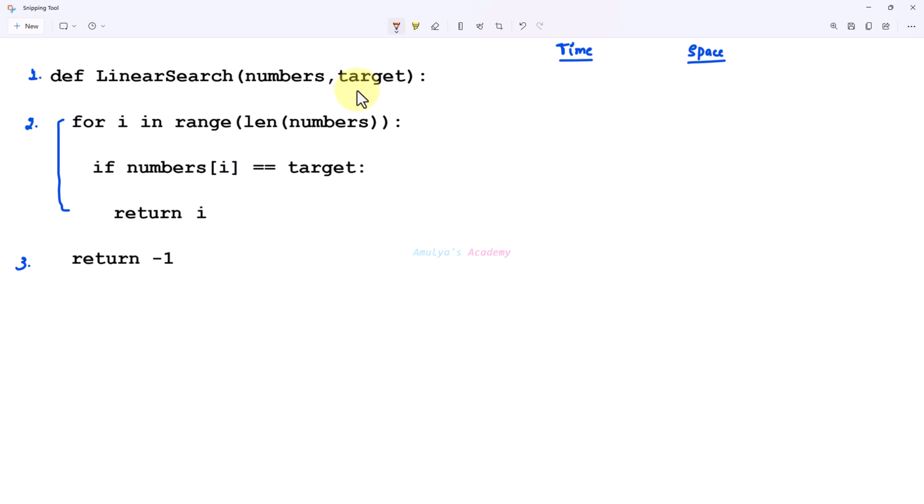For time complexity this line defines the function and does not perform any operation proportion to the input size, so constant time. And for space complexity when the function is called the data numbers list and target is passed as arguments, so it take constant space. So I'll take big O of 1 constant space.